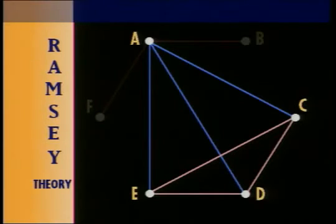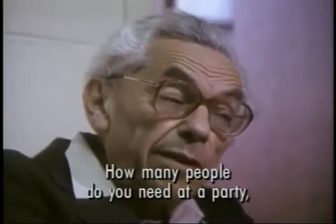No matter how hard you try, you cannot avoid ending up with either a red triangle or a blue triangle. And that is the mathematical proof that if you are trying to connect six points with red and blue lines, you will always get at least a red or a blue triangle.